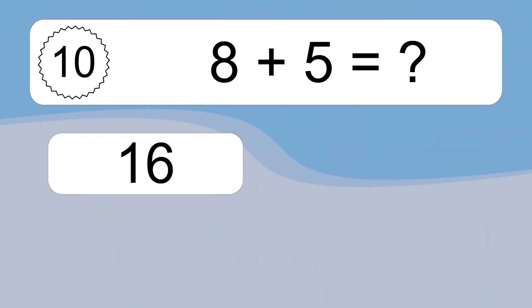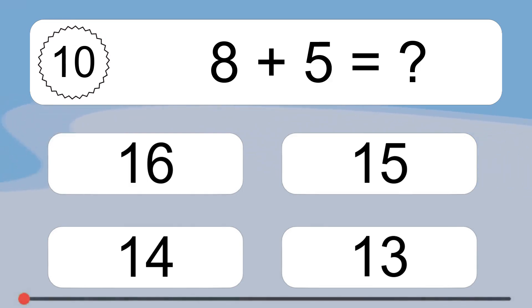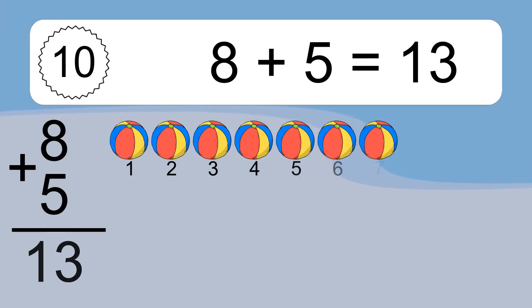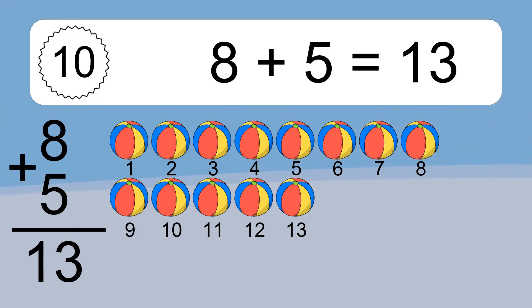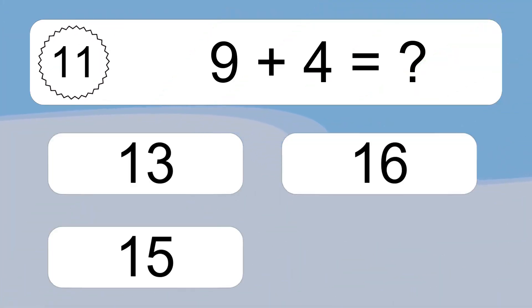8 plus 5 equals what? 8 plus 5 equals 13. Let's count it: 1, 2, 3, 4, 5, 6, 7, 8, 9, 10, 11, 12, 13.